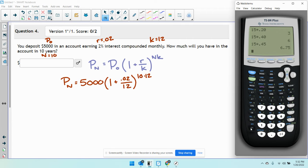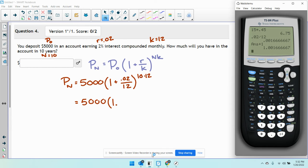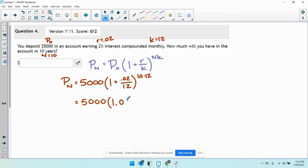So I'll start by simplifying that fraction, 0.02 divided by 12, and then I'll add 1. So I get 5,000 times 1.0016 repeating to the 120.